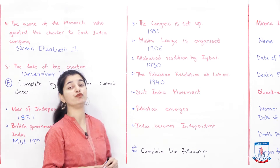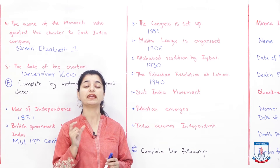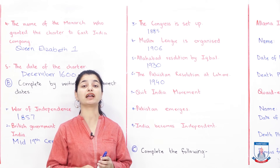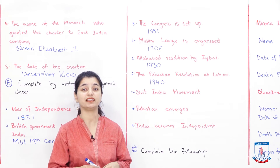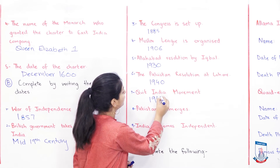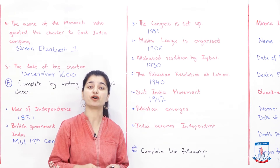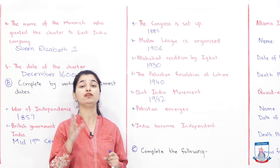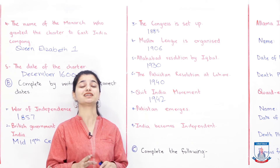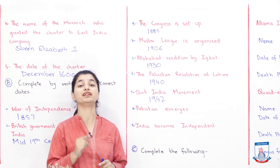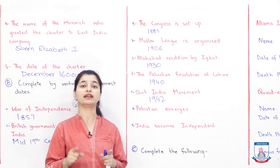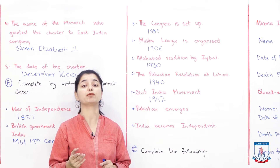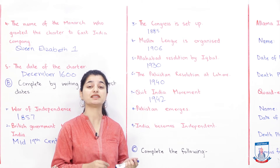Next part is the Quit India Movement. When was that? Gandhi was the person who started this movement, and he started it in 1942. That was after the Muslim League was formed, after the Congress was formed, and after the Pakistan Resolution as well. After about 80 years of British rule, Gandhi said they cannot continue this and they want the British to leave India. So he started the movement for them to quit the subcontinent. This was in 1942.